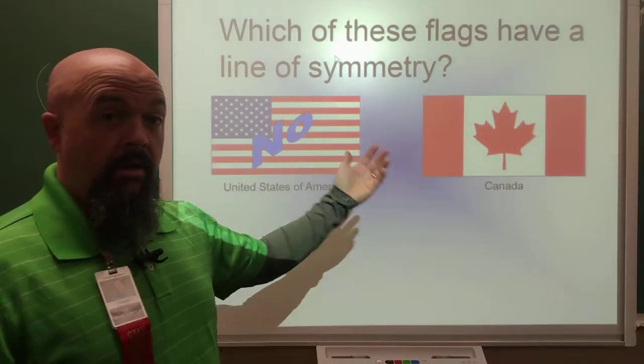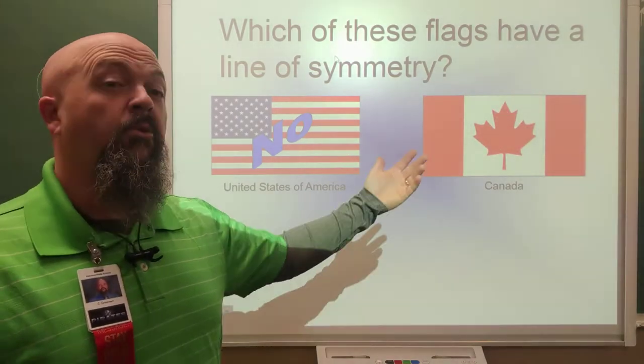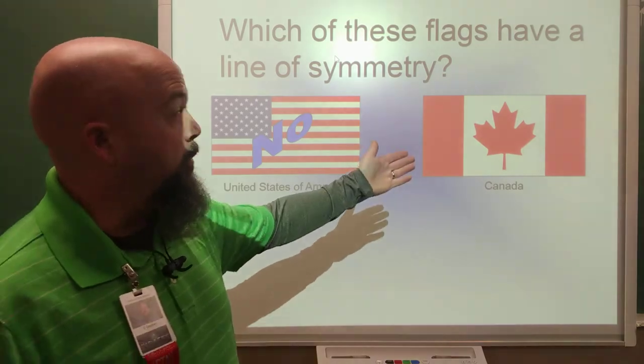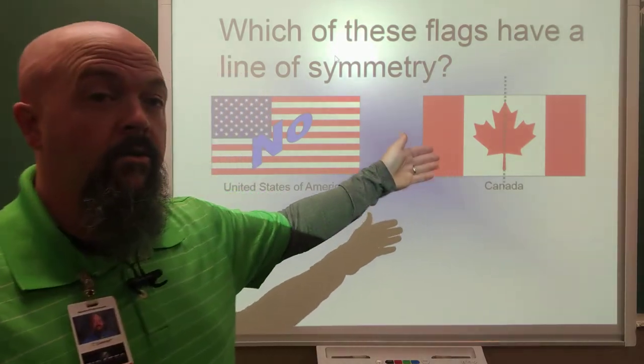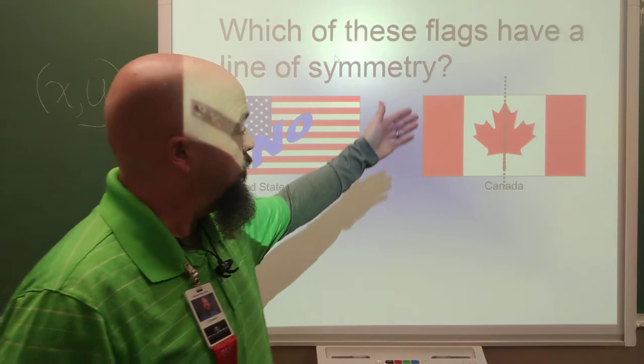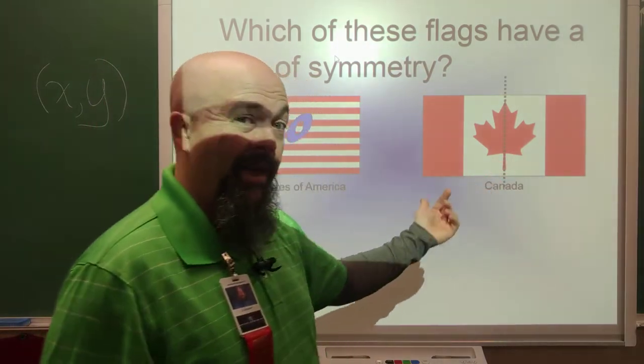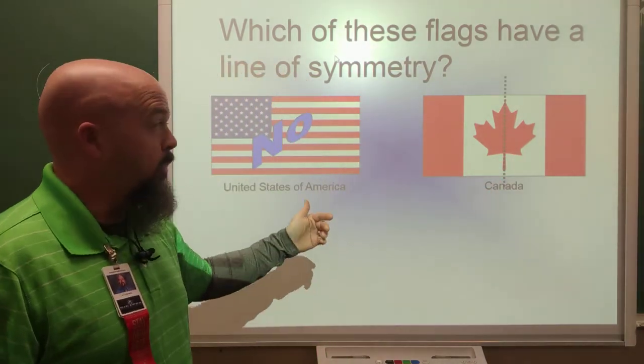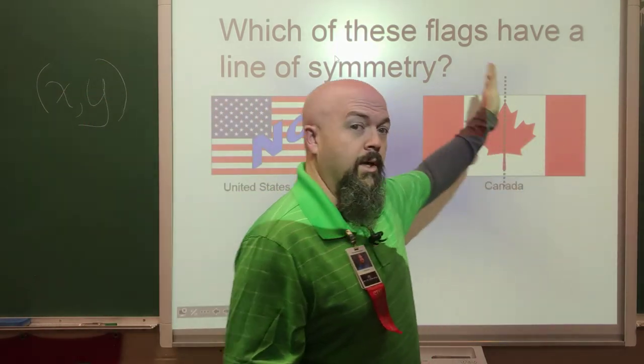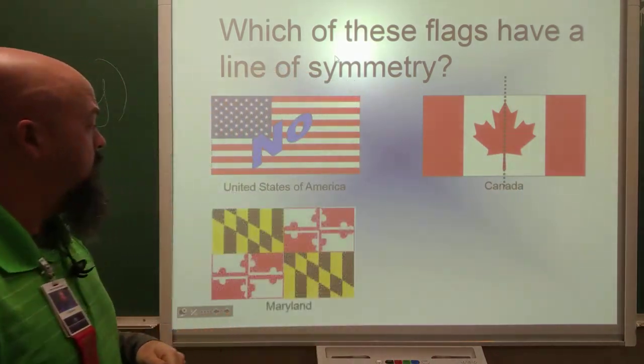Let's move on to Canada. Canadian flag. Maple leaf. Well, the way the maple leaf was drawn on this flag, you could actually split it down the middle. Right? If you split it down the middle of the flag, you get symmetry, both halves being the same. Can we do a line this way? No. But we get at least one line of symmetry here.